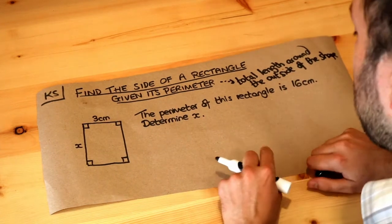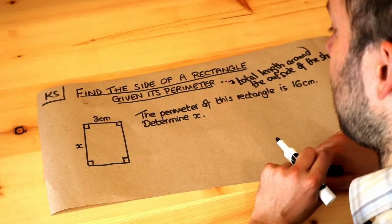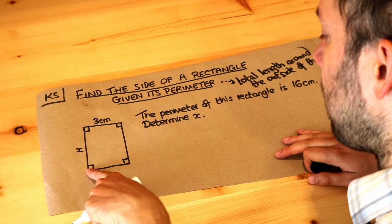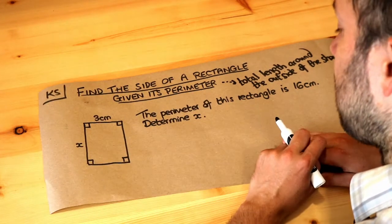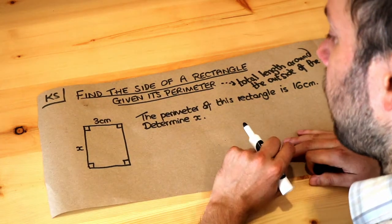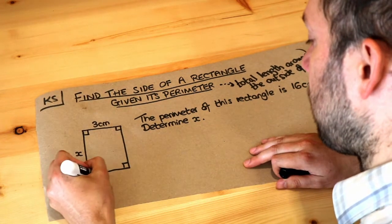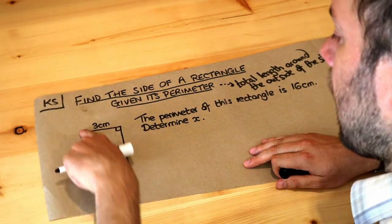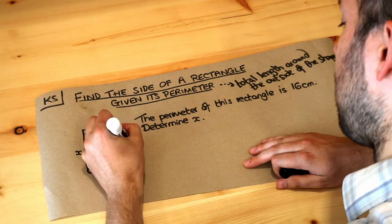So if we're told that the perimeter of this rectangle is 16, that means that all these lengths added together add up to 16. With a rectangle we know that the top length is the same as the bottom length, so we can copy that over, and the left length is going to be the same as the right length.